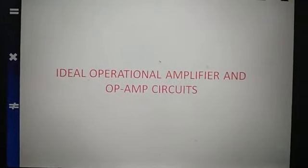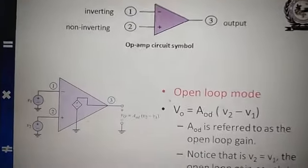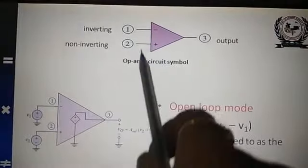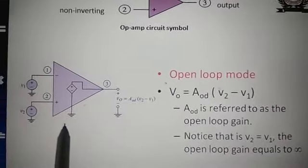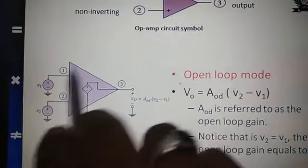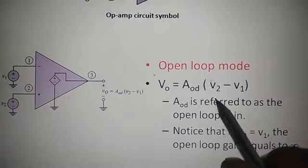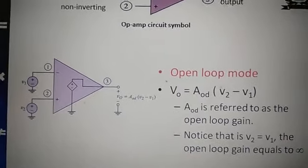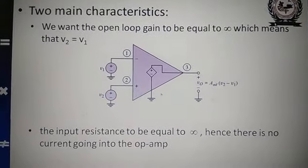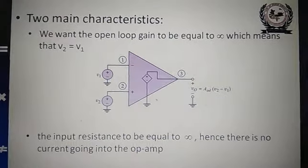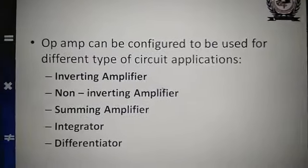The operational amplifier op-amp circuit has an inverting and non-inverting terminal, and this is the output. This is the open loop mode where these two inputs are there. In open loop case with no feedback, V0 is equal to the differential gain AD into V2 minus V1. The input impedance of an ideal op-amp is infinite, and the open loop gain of the ideal op-amp is also infinite.